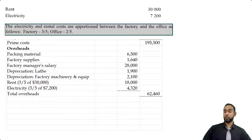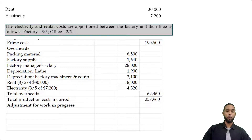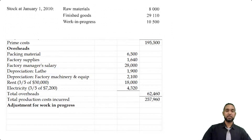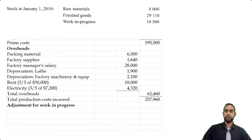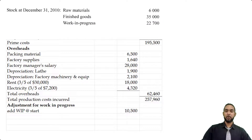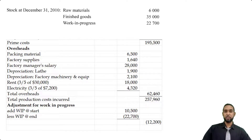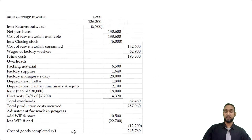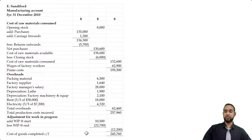Now we adjust for work in progress. The opening work in progress of $10,005 is added, and the closing work in progress of $22,700 is subtracted. I like to shift the work in progress figures one space to the left to show a net adjustment, but those two figures can also be in the rightmost column. This gives us the cost of goods completed, or cost of goods produced, of $245,760.